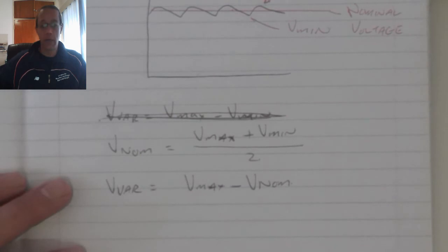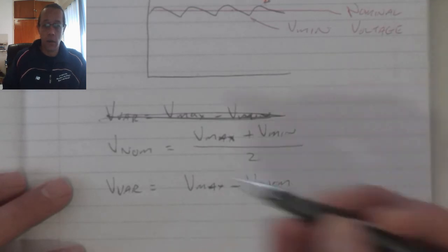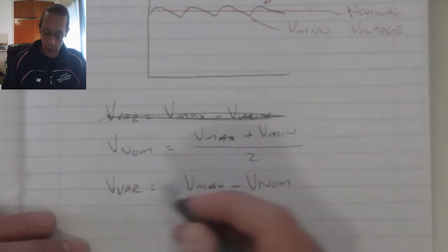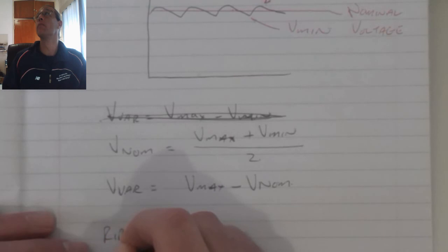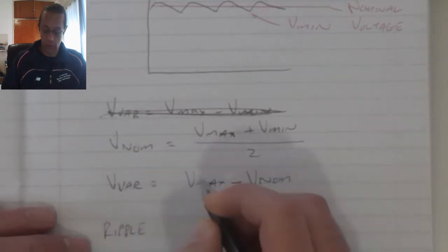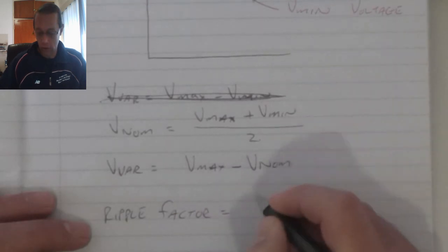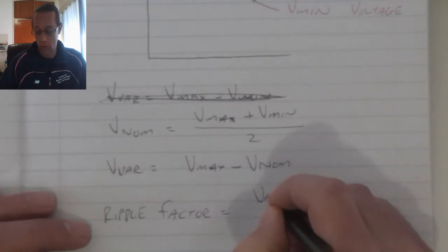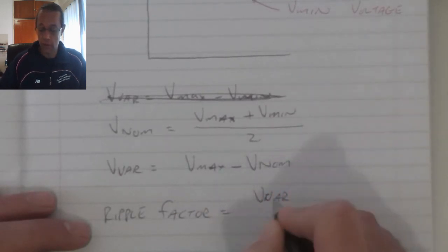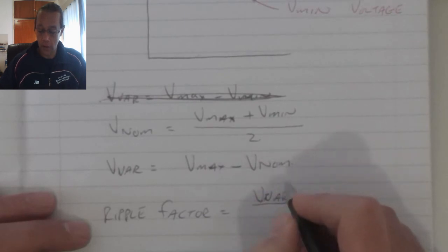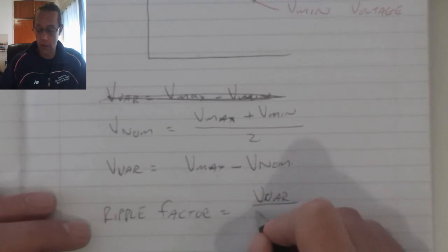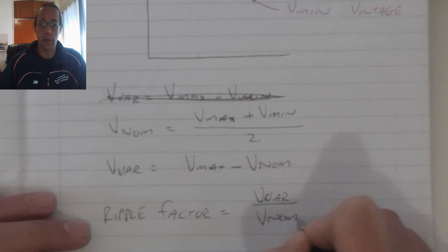In order to calculate my ripple factor, in other words, the percentage of the waveform that cannot be used in the continuing stages. The ripple factor is equal to my variance, my variance voltage, divided by my nominal voltage.